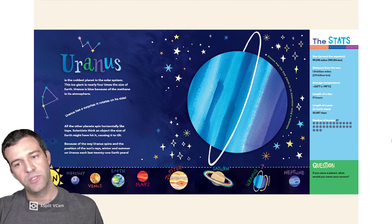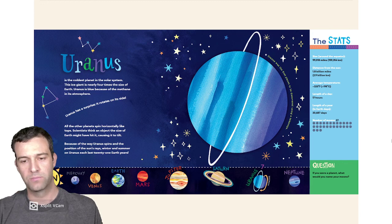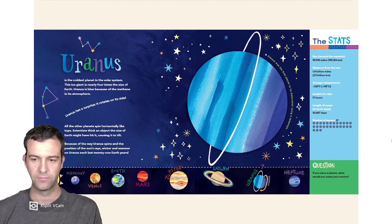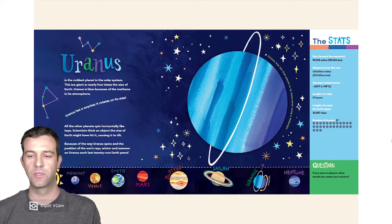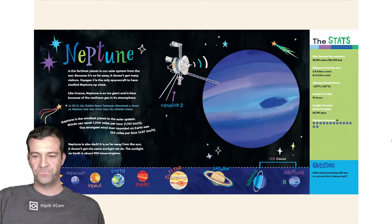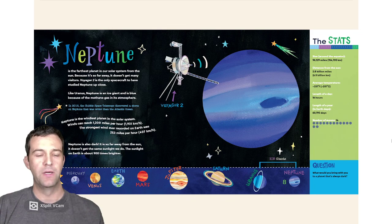Uranus was the first planet to be discovered using a telescope. Question: If you were a planet, what would you name your moons? Oh, I don't know.